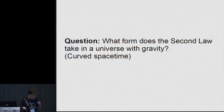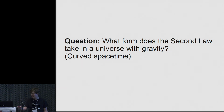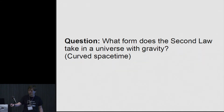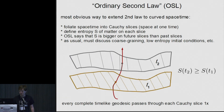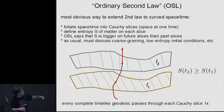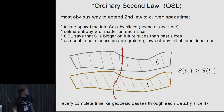One question that really launched a lot of this subject is: what form does the second law of thermodynamics take in a universe that has gravity? This requires us to start thinking about curved spacetime. One thing about a curved spacetime is we no longer have a unique notion of simultaneity. There are many different ways of slicing spacetime into space at one time.